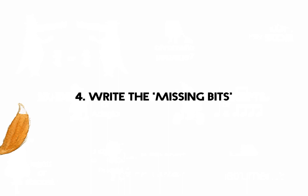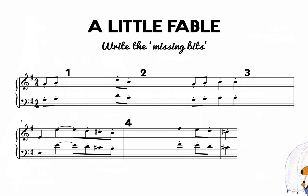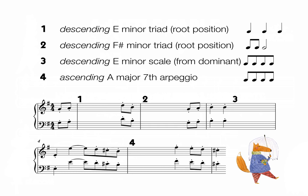Moving on to number four: write the missing bits. Here you've got the first six bars of A Little Fable. What the pupil has to do is write the descending E minor triad in root position using three crotchets — under number one they've got to add that in. A Little Fable moves entirely in octaves between the right hand and the left hand part. That is an activity in the pupil workbook for this particular piece.